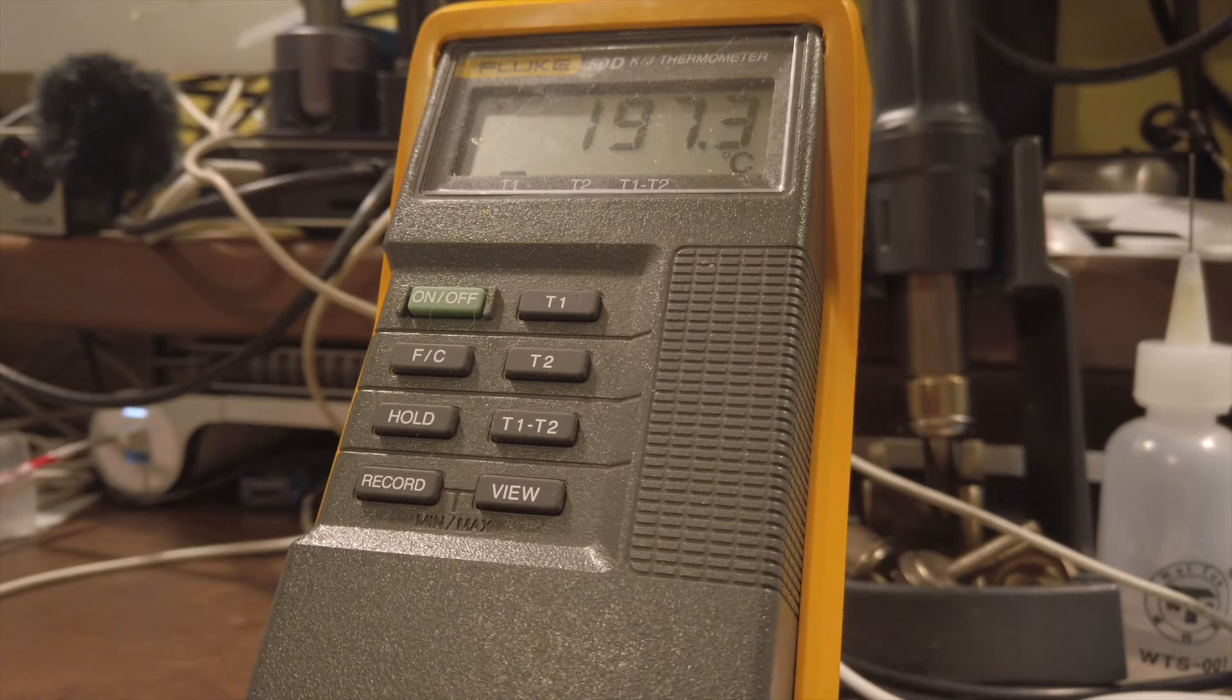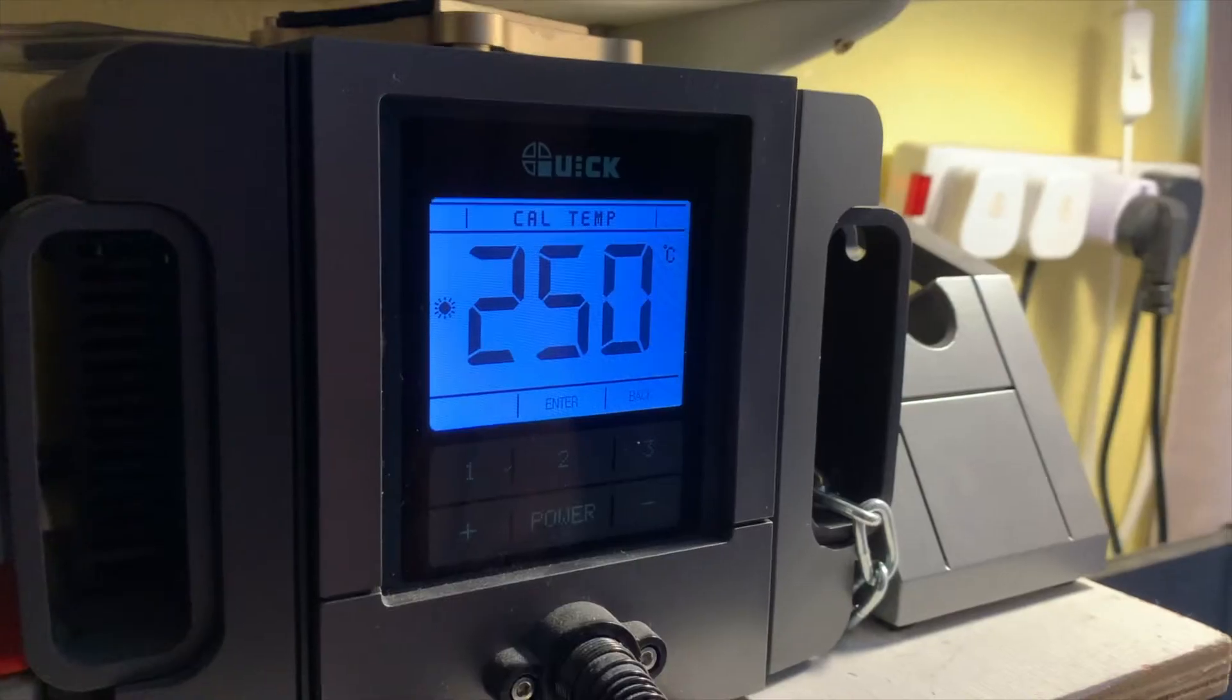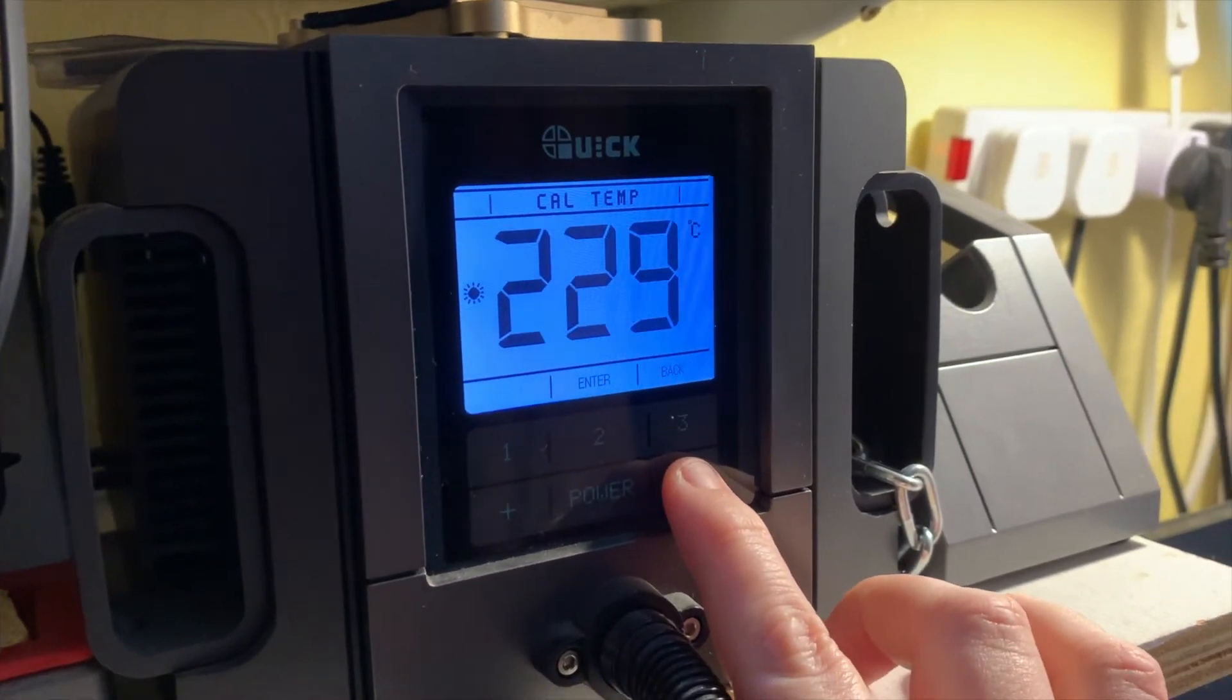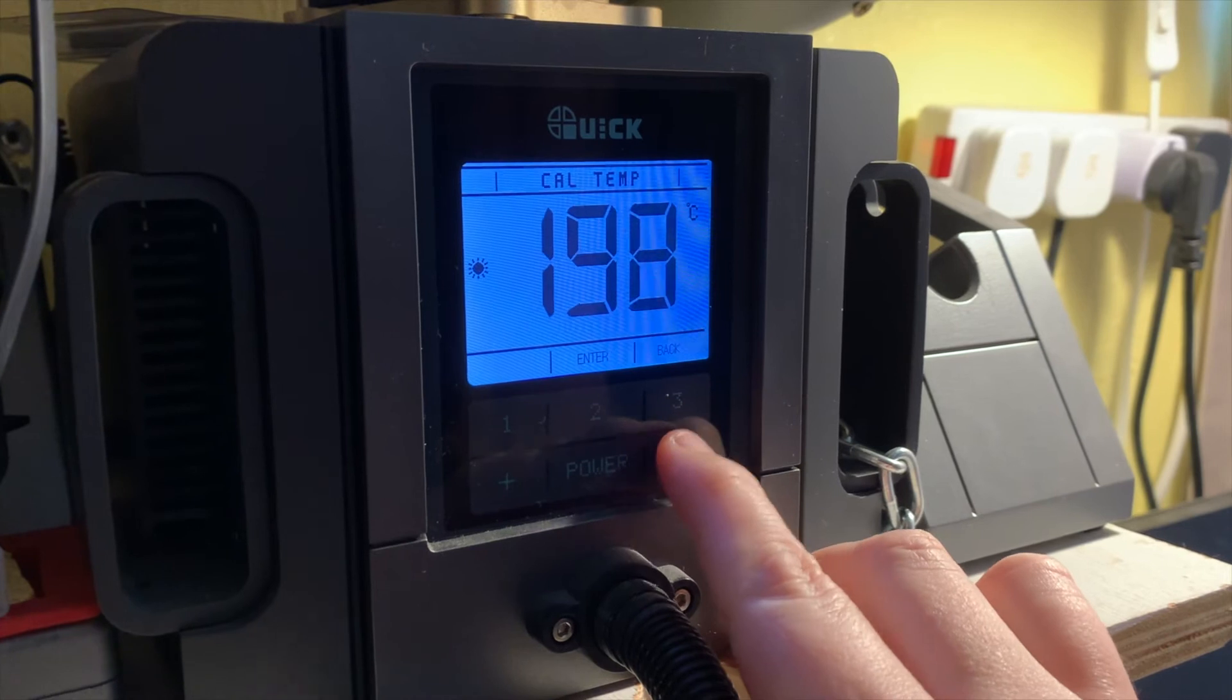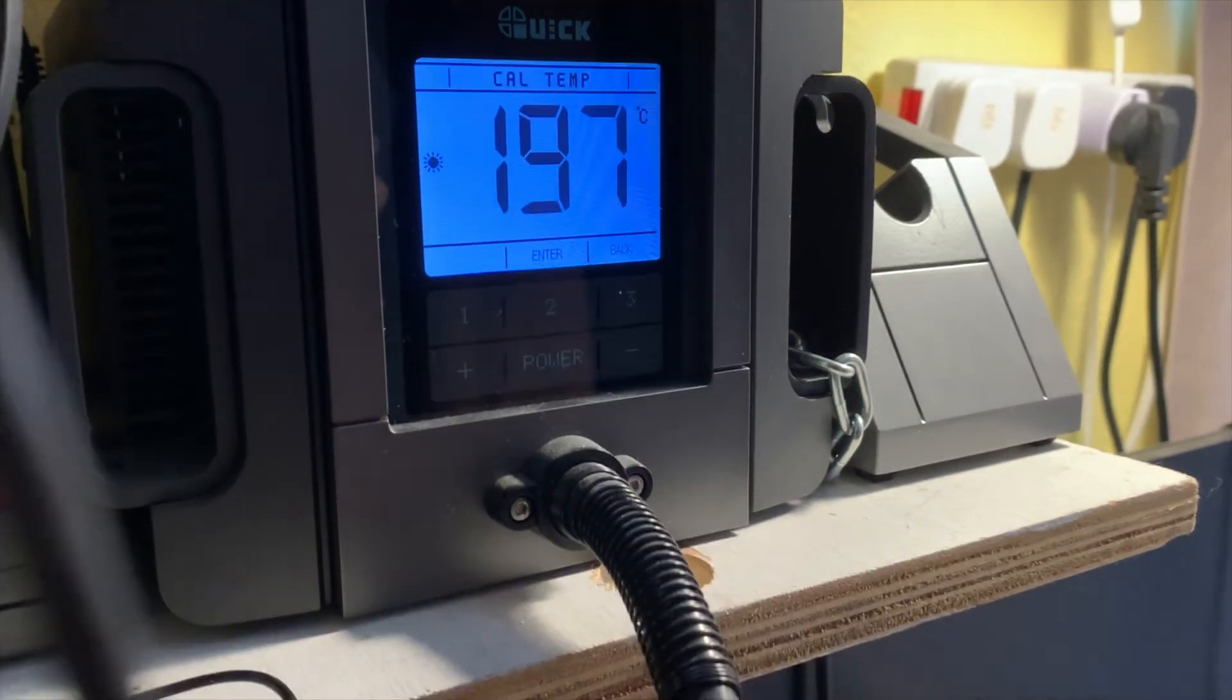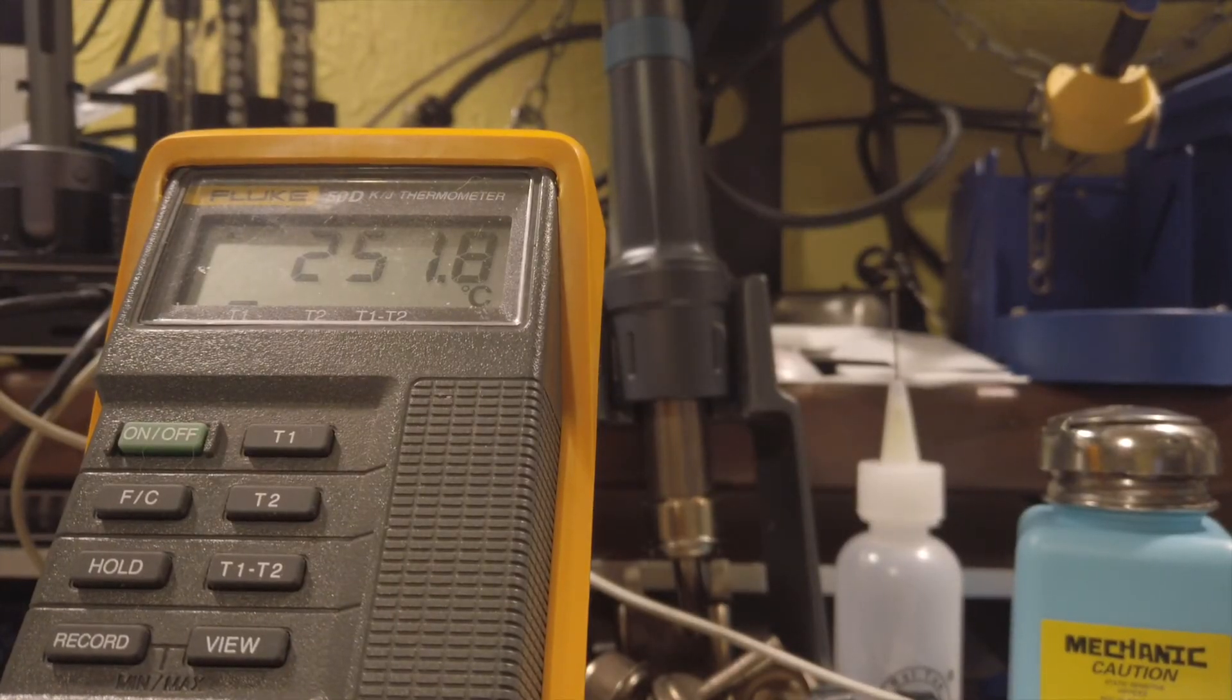So what you want to do now is type 197 into the hot air station while it's in calibrate mode. So you use the up and down buttons. Just go down to 197. Right. Once you hit enter, it'll calibrate it. So it'll push it up by whatever difference in the temperature.